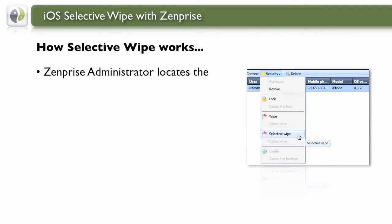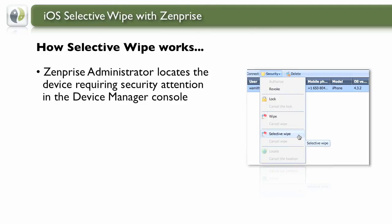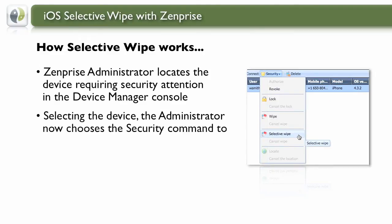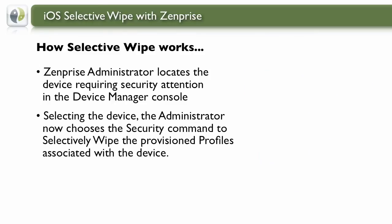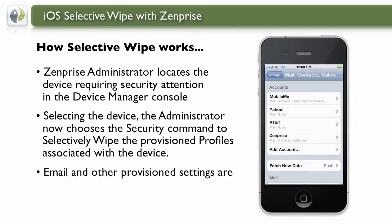In the event of a lost, stolen, or device leaving the organization, a ZenPrize administrator can simply locate the device in the console and, from the Security panel, choose the Selective Wipe option.